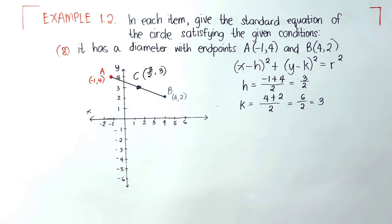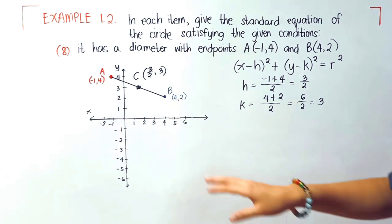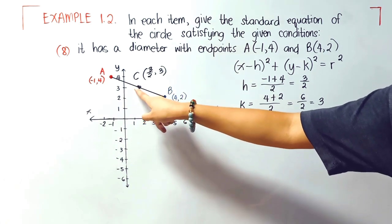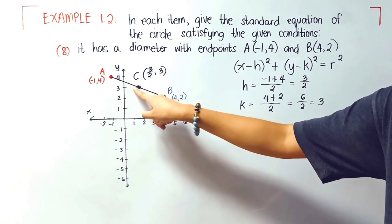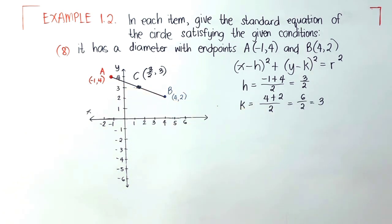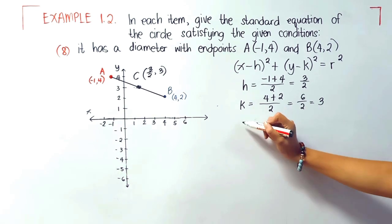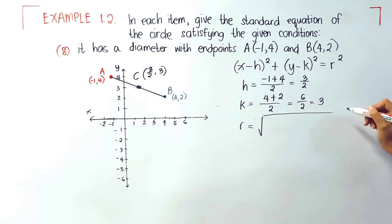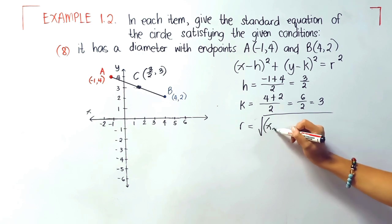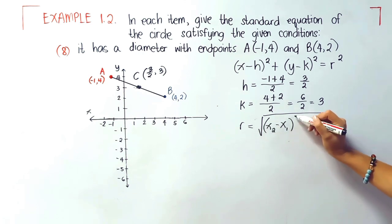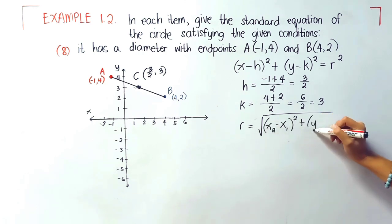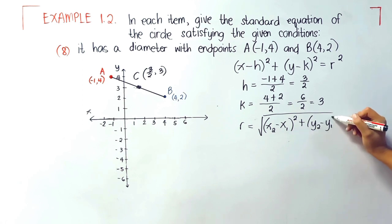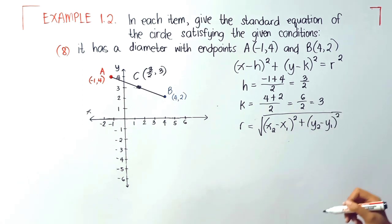Now we will be using our center and our point here to get the radius. We will be using the distance formula to get the radius. Let me recall that's (x₂ - x₁)² + (y₂ - y₁)².